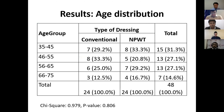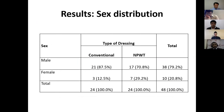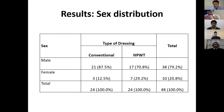Coming to the results: regarding age distribution, the bar diagram shows that more patients belong to the 46 to 65 years age group. Regarding sex distribution and type of dressing between conventional and negative pressure wound therapy groups, more members belong to the female group.